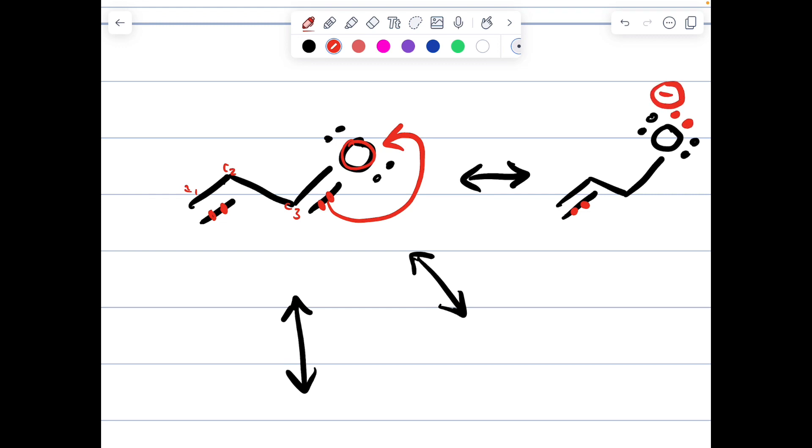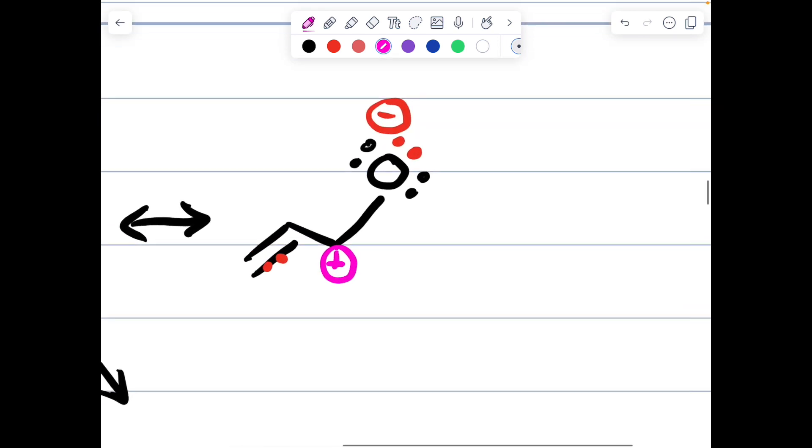What we did move was we put these two electrons that were initially in the pi bond onto that oxygen. Gain electrons become negative. The arrowhead is pointed at the oxygen. Carbon three lost an electron. It lost this electron that initially was sharing in the pi bond with the oxygen. So it becomes cationic.